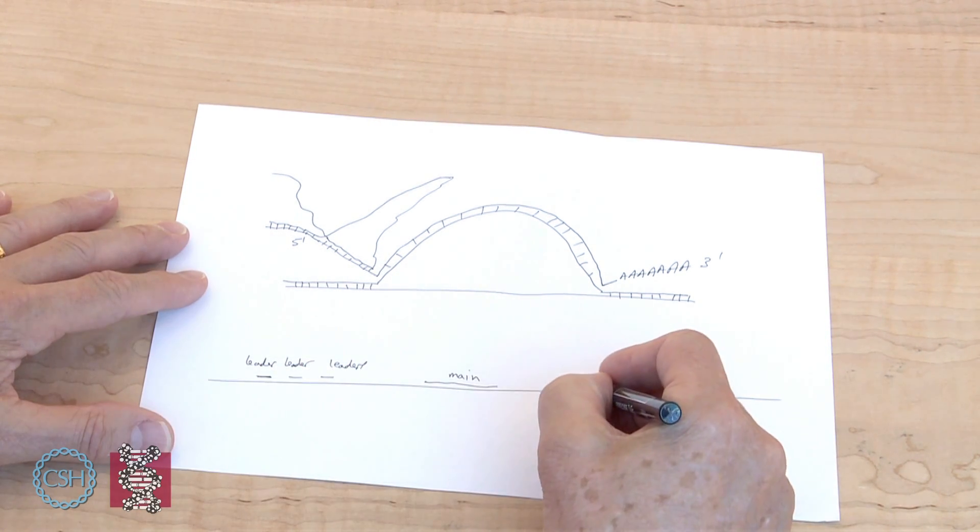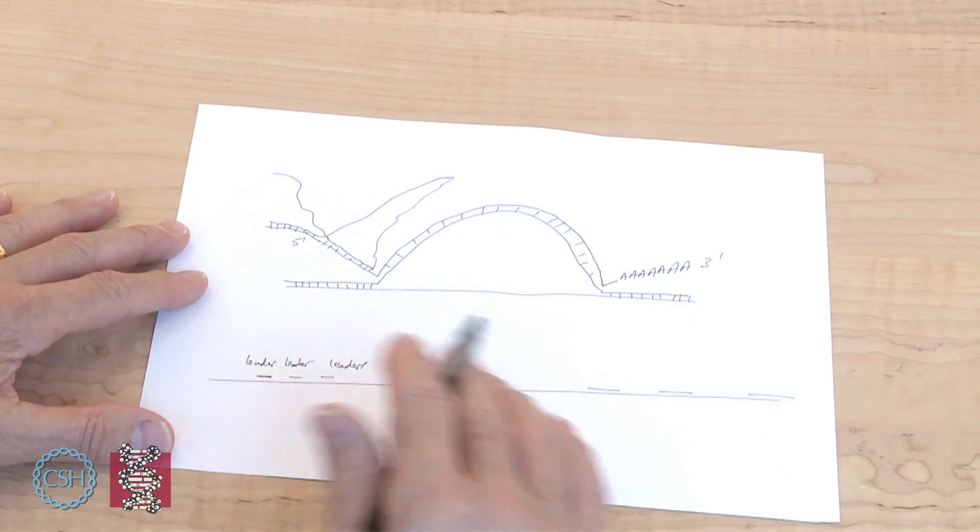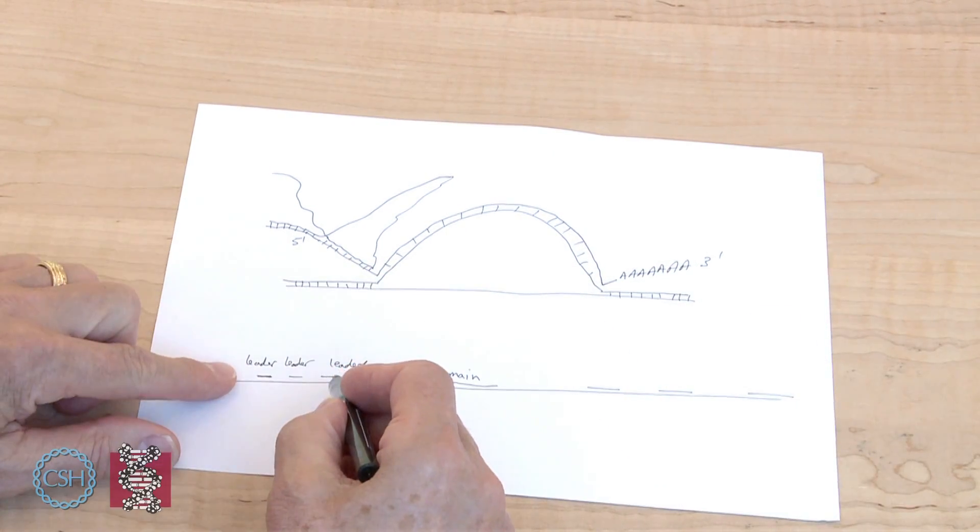But this same leader also got joined to a gene out here and a gene out here. And so on. All of the late adenovirus genes all had this same structure.